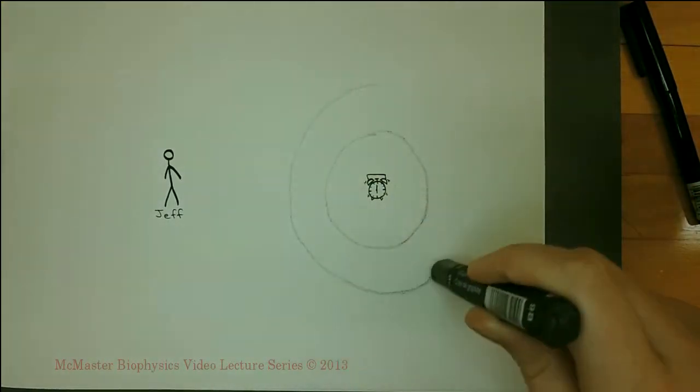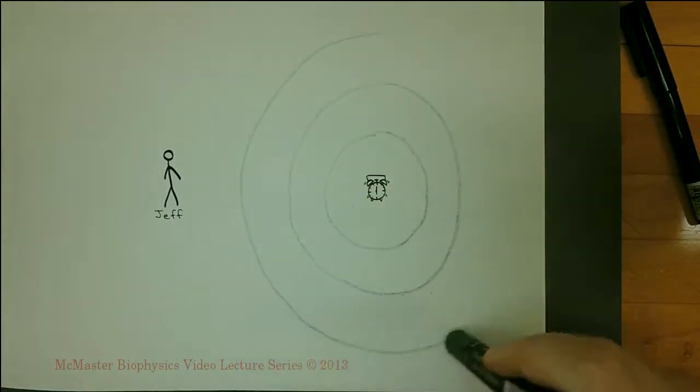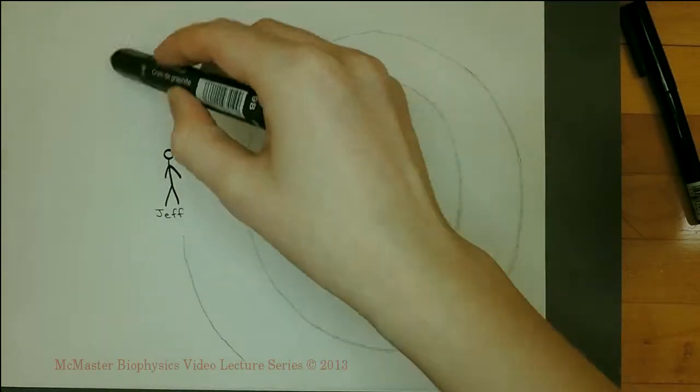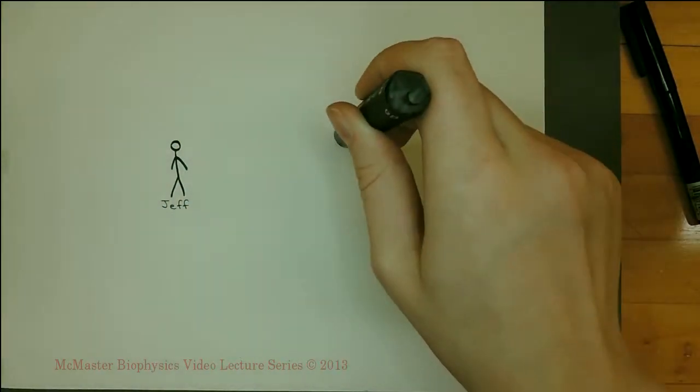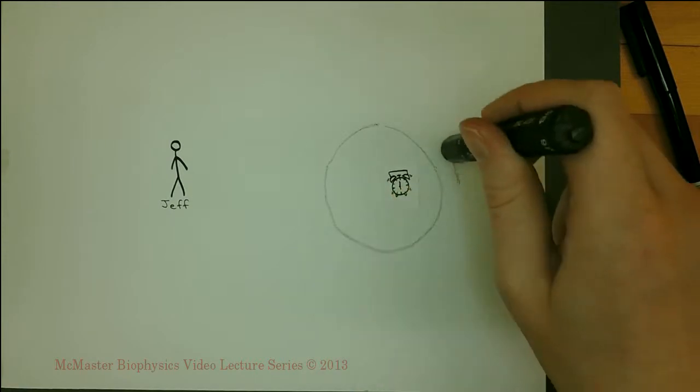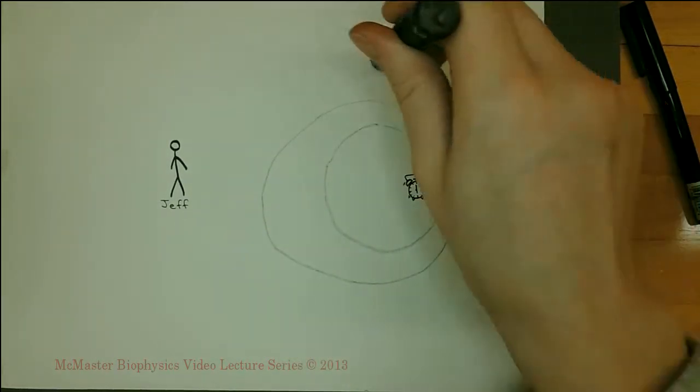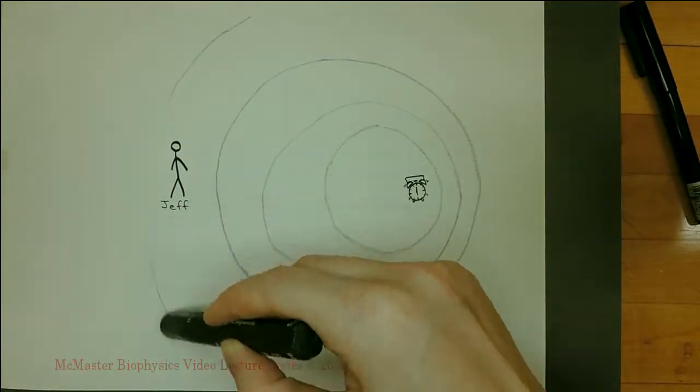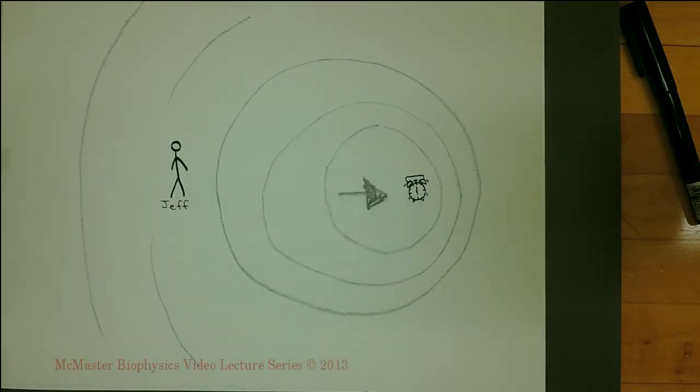If Jeff listens to a sound while neither the source nor Jeff is moving, he hears the true pitch or frequency. If Jeff listens to the sound while the source moves away from him, the wave is more spread out, and the pitch appears lower to Jeff than it really is.